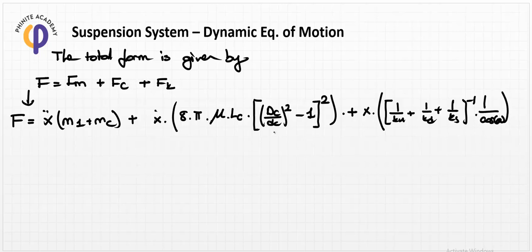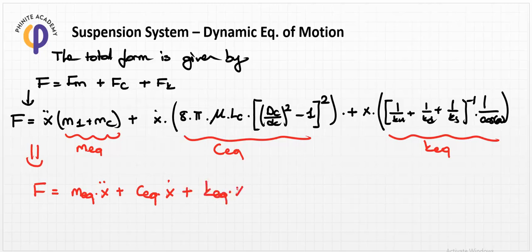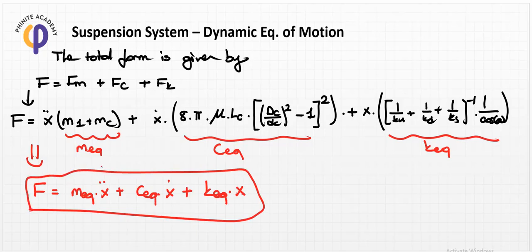These are the general notation form of the mass-spring-damper system for the suspension system. In simplified form, we summarize everything as m-equivalent, c-equivalent, and k-equivalent. The final equation is: F equals m-equivalent times x-double-dot plus c-equivalent times x-dot plus k-equivalent times x. This is our general formula for the suspension system. All the m, c, k values are derived directly from shape parameters and material selection factors used in real-life application design.